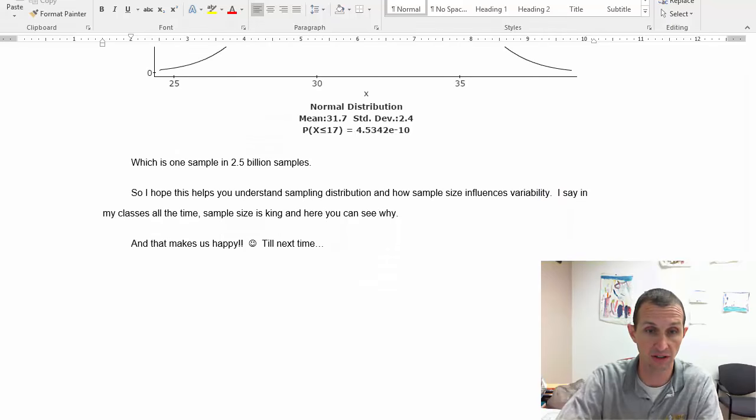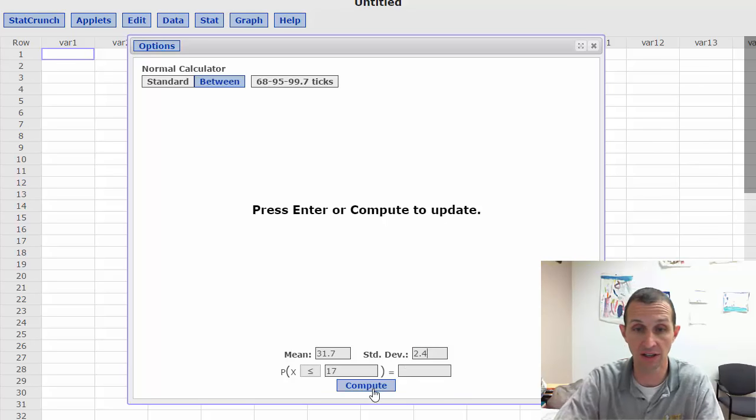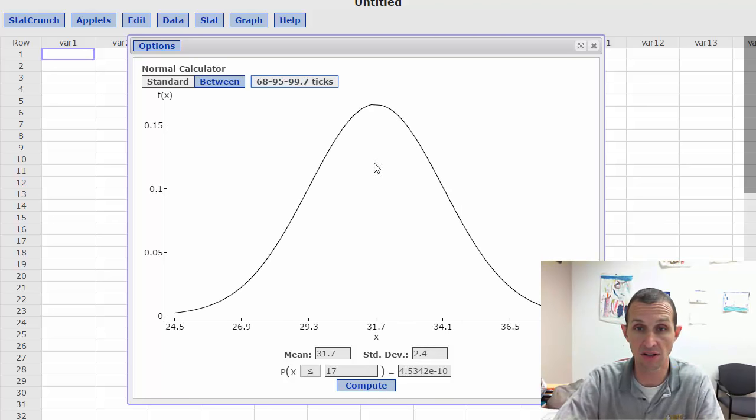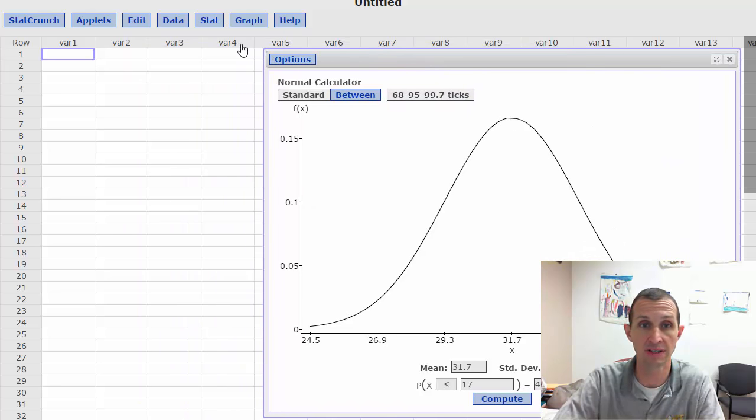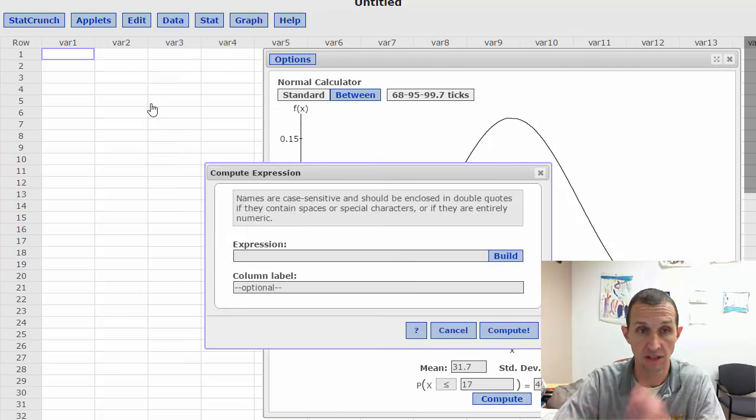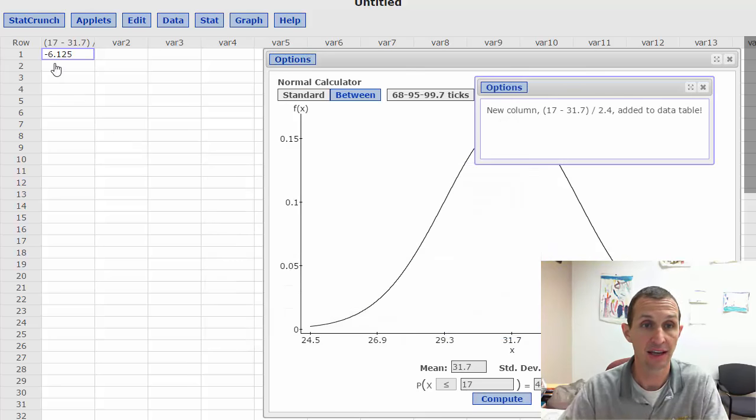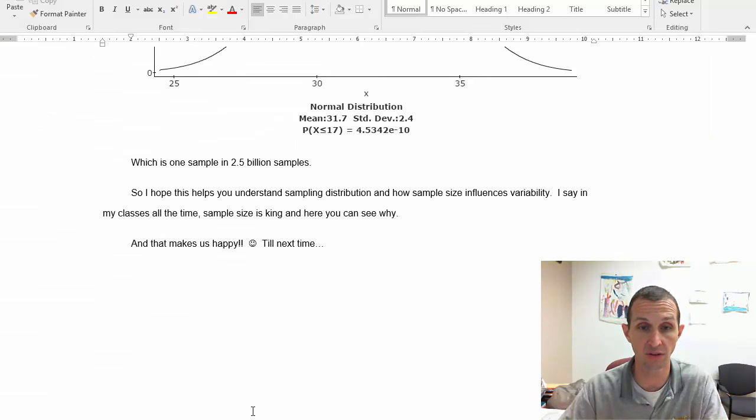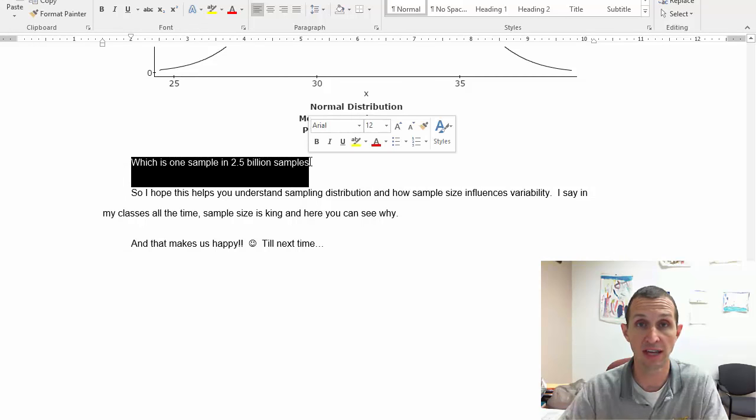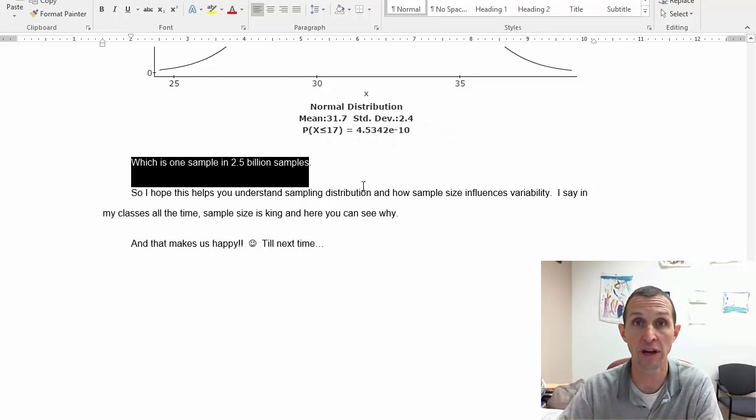Let me switch over to StatCrunch. If I put the 2.4 in here and I click compute what you can see is there's 31, 29, 26, three standard deviations is 24 and a half years old for the average age. So 17 is way further away. In fact if we wanted to calculate it we could compute the expression and we could say well if it's 17 and 31.7 is what we would expect, if I divide that by the 2.4 years then what I would get is a little over six standard deviations away which is one in one sample in two and a half billion samples. That's how rare that would be.